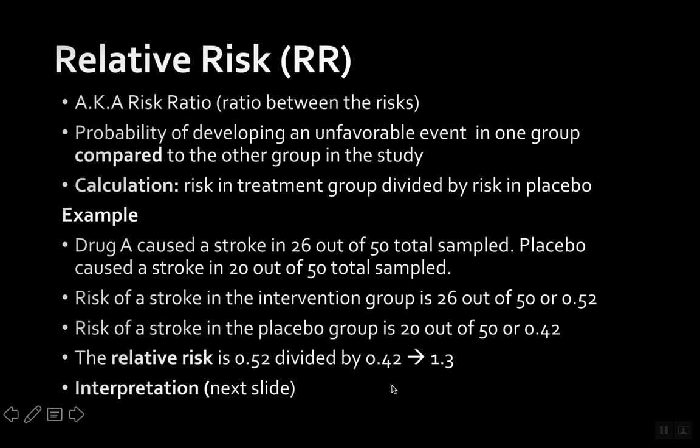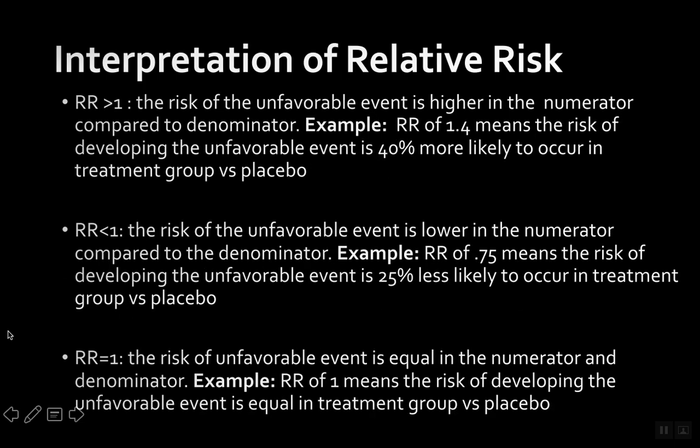So how do you interpret that? When the relative risk is greater than 1, it means that the risk of an unfavorable event is higher in the numerator compared to the denominator. For example, a relative risk of 1.4 means that the risk of developing an unfavorable event is 40% more likely to occur in the treatment group versus the placebo group.